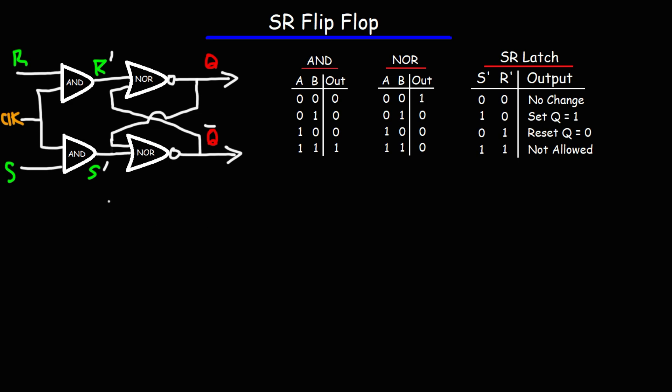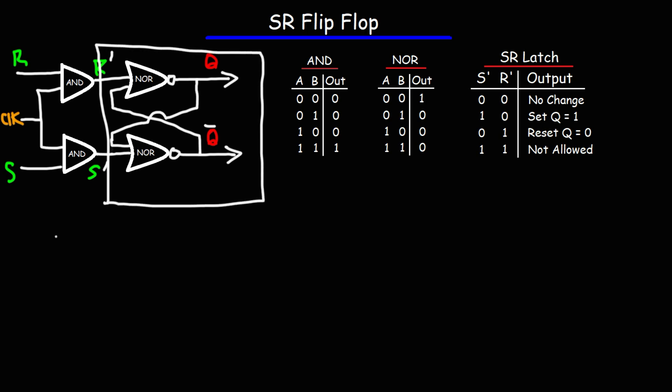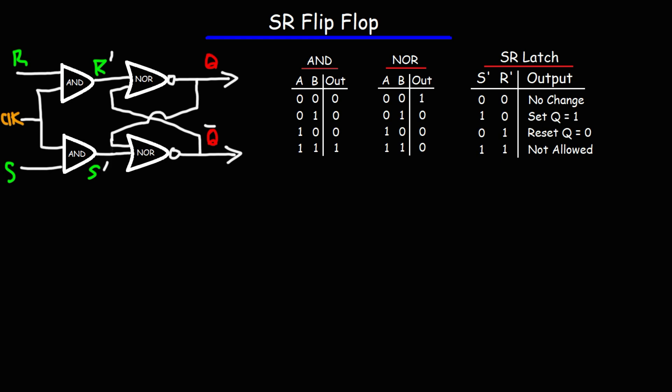The SR flip-flop circuit is basically the SR latch circuit with two additional AND gates. There's the SR latch circuit with NOR gates and also with NAND gates, but once you add two AND gates you can make the SR flip-flop circuit. The main difference is this additional input sometimes called the enable or clock input, which controls the circuit. The output is not going to change unless the clock input is active — if there's not a 1 at the clock input, the output is not going to change. This circuit has more control compared to the SR latch circuit.